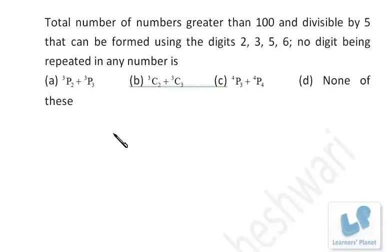Now let's see this problem. Total number of numbers greater than 100 and divisible by 5 that can be formed using the digits 2, 3, 5, 6, no digit being repeated.